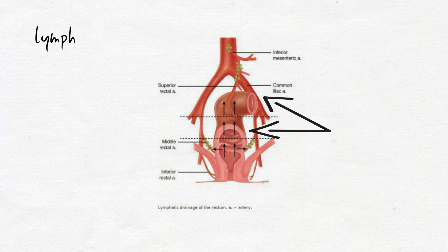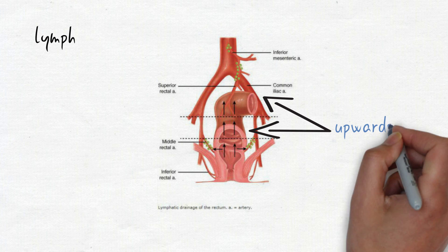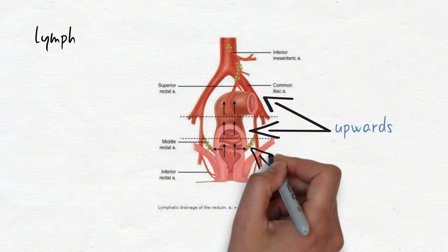Let's see the lymph system. Upper one-third and middle one-third of the rectum lymph drain in the upward direction. Whereas lower one-third is drained into the lateral direction.